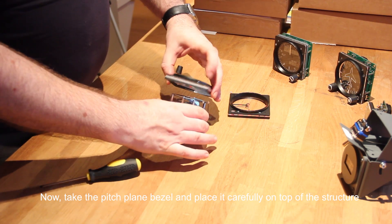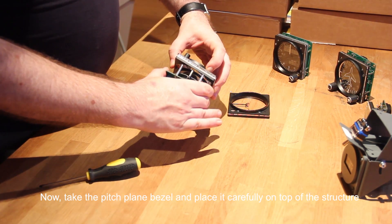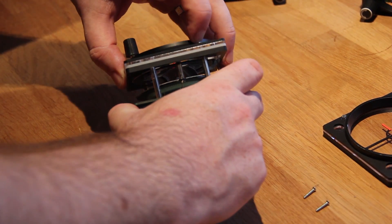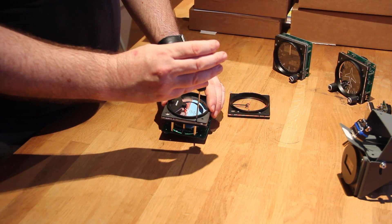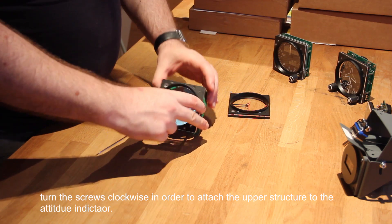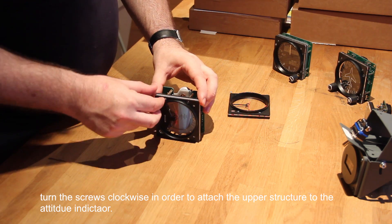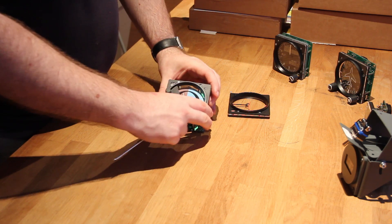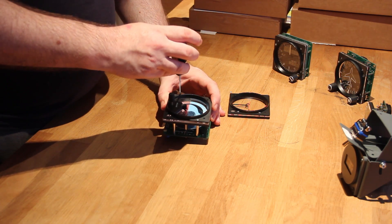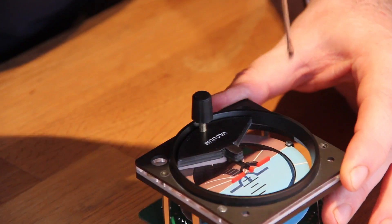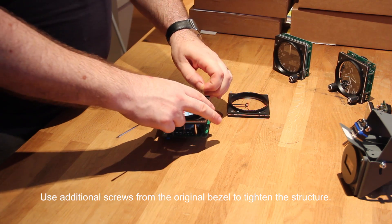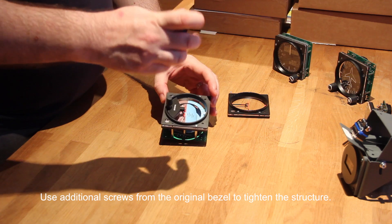Now, take the pitch plane bezel and place it carefully on top of the structure. Turn the screws clockwise in order to attach the upper structure to the attitude indicator. Use additional screws from the original bezel to tighten the structure.